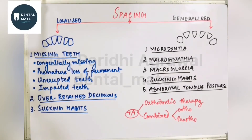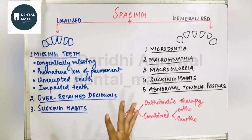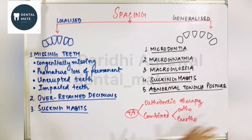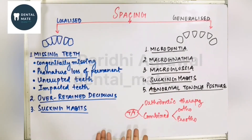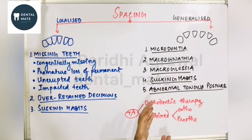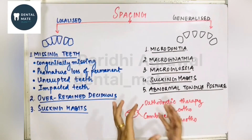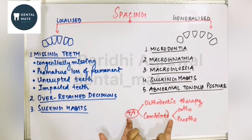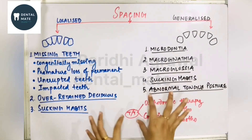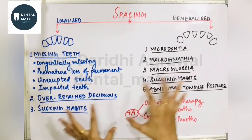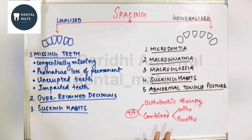Now let us begin with spacing. Spacing causes deposition of calculus, leading to periodontal problems, and caries can also occur, but the main problem with spacing is aesthetics — that is the main concern of the patient. Spacing is basically an imperfection in the teeth alignment wherein there is a gap between two teeth or many teeth. It is broadly classified into two types: localized and generalized spacing.